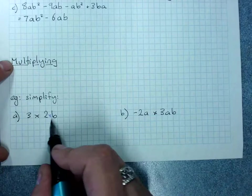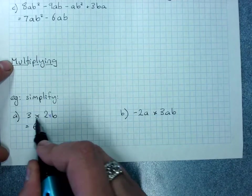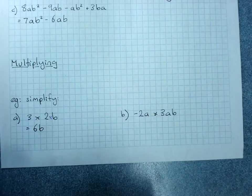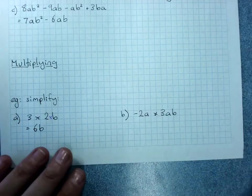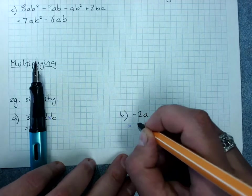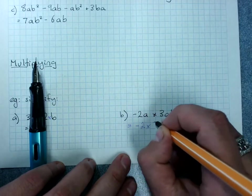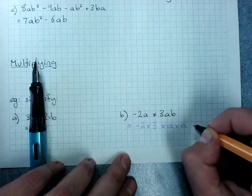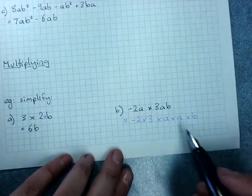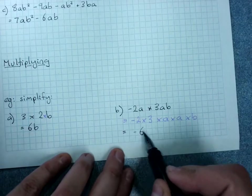This just means 3 times 2 times b. I can do the 3 times 2 first, 6, and remove the times sign for b. Again, there's a rearranging that can happen here. We could write, this is negative 2 times 3 times a times a times b. Negative 2 times 3 is negative 6.